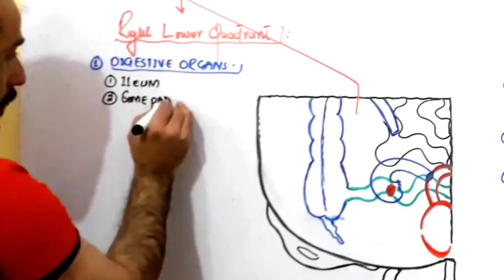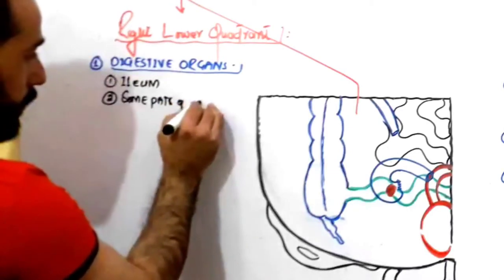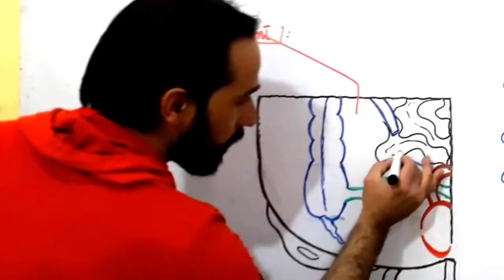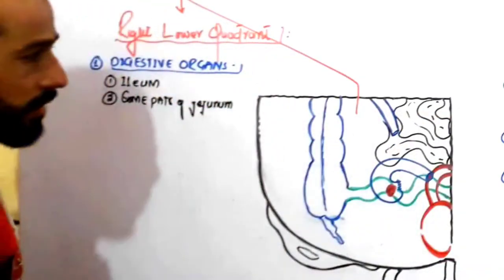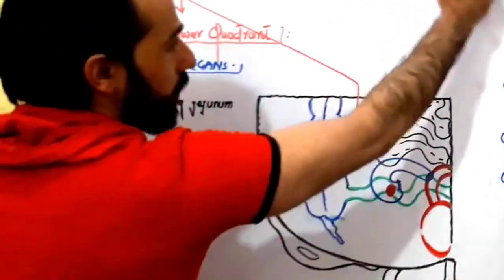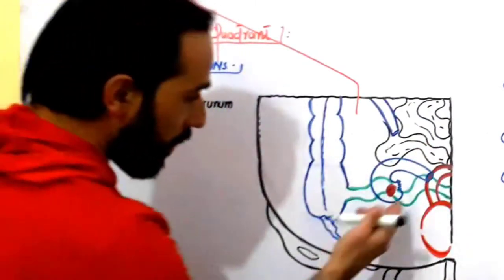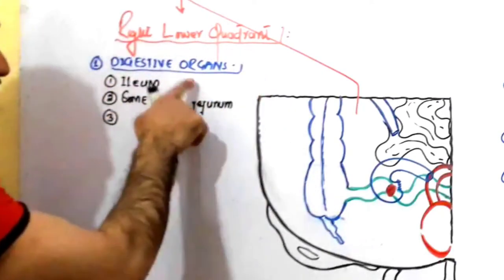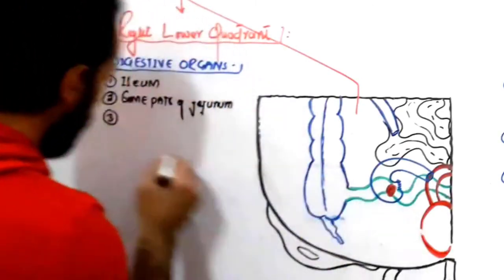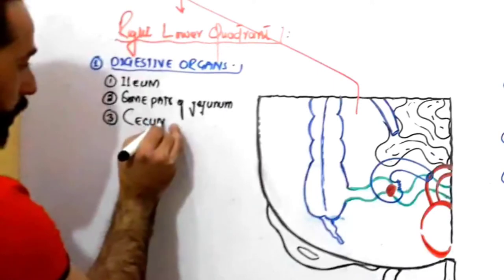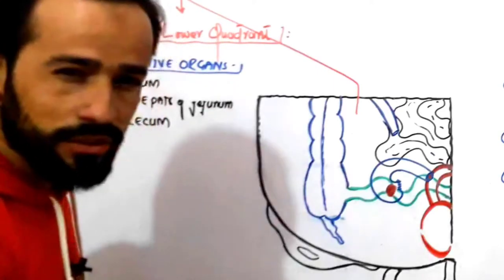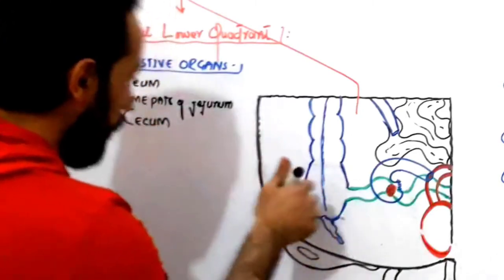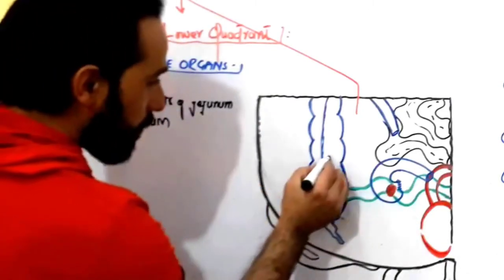Some parts of the jejunum — you can see the black line I have drawn here — those are some parts of your jejunum. Then there is the duodenum, then the jejunum, and then the last parts of your ileum. The third important organ found in the right lower quadrant is your cecum — the first part of your large intestine, which receives digested food from your ileum.